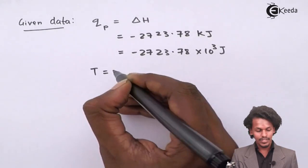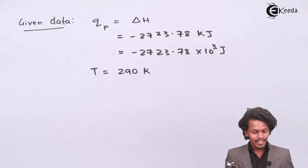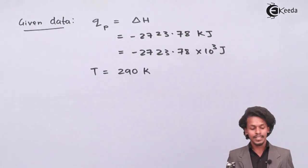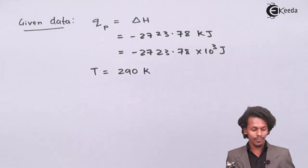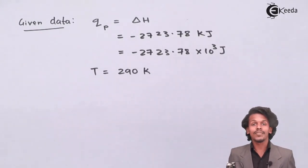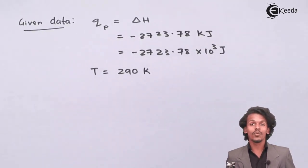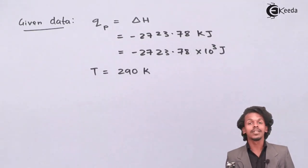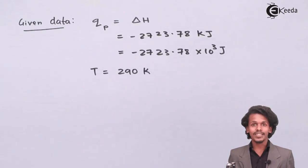The temperature T is 290 Kelvin. During the combustion of glucose at constant pressure, we have to calculate what the heat of combustion at constant volume will be. The first step is to write the combustion reaction for glucose.